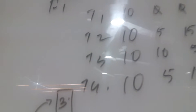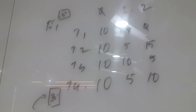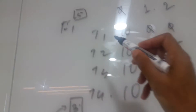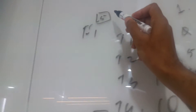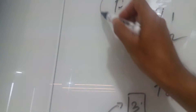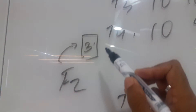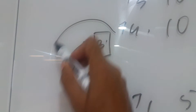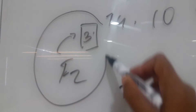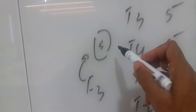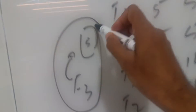Let us see how we really update the burndown chart. We have feature 1 with a story point of 5, feature 2 with a story point of 3, and feature 3 with a story point of 5.